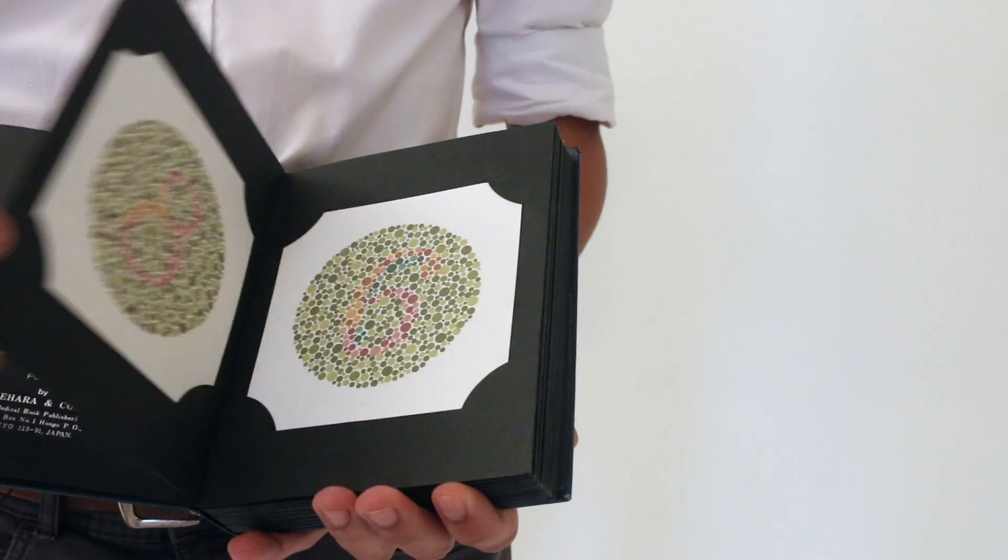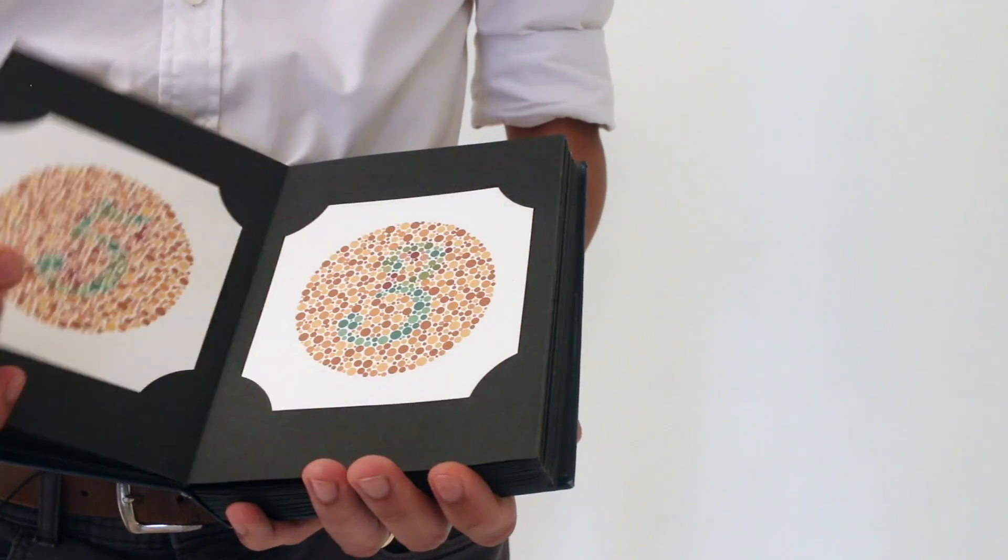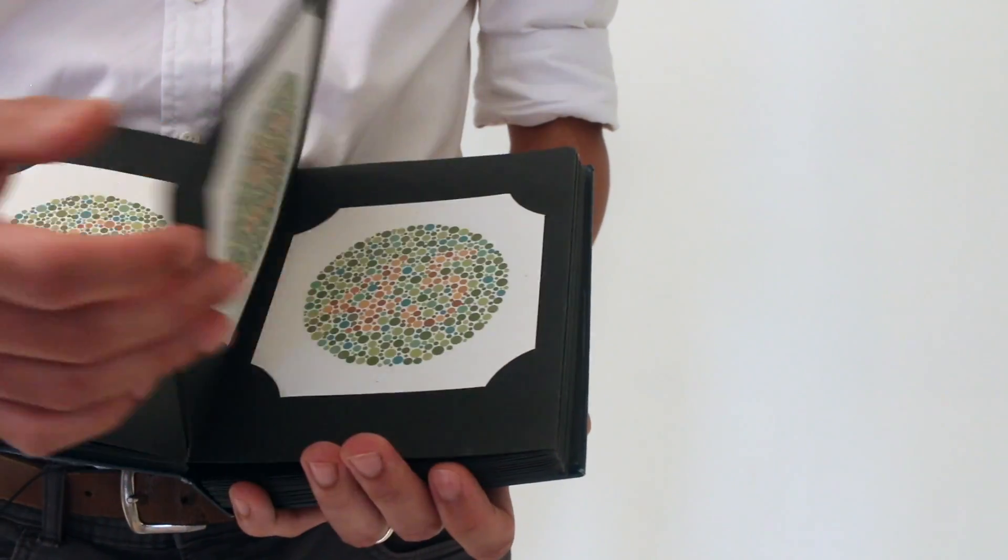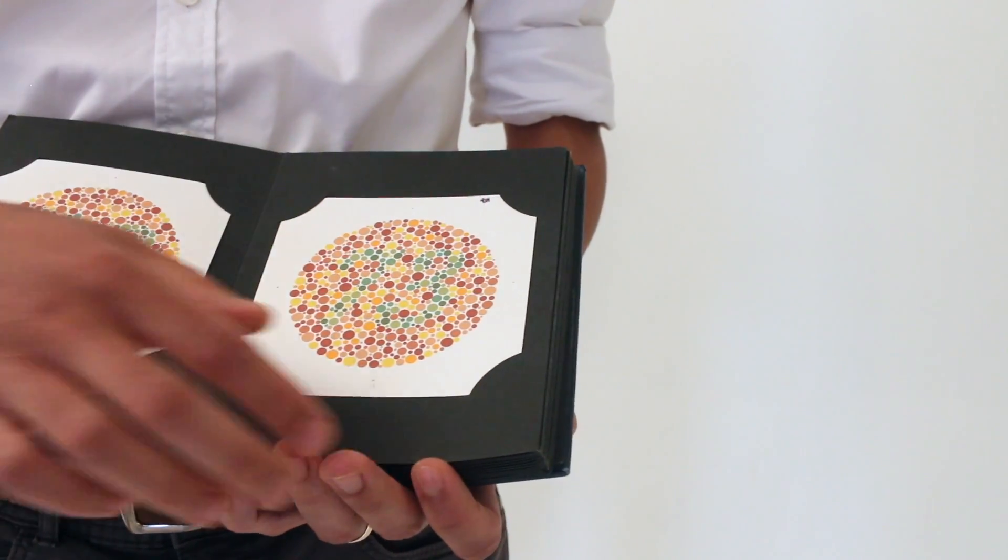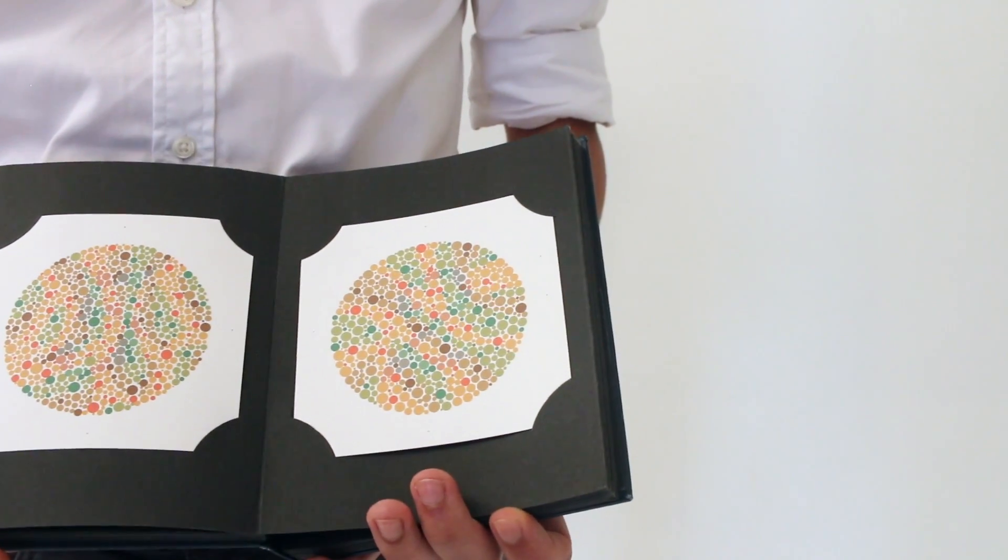You test one eye at a time, going through all the numbers until you get to the page where there is no numbers. Like that. And then you stop and you can test the other eye.